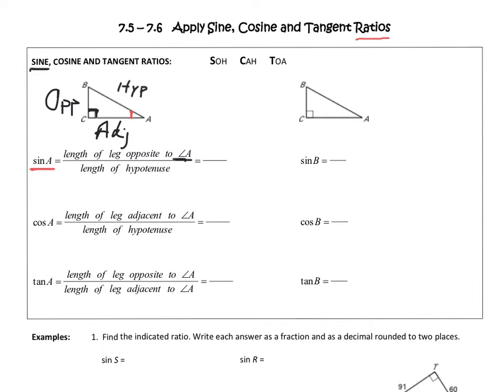So every time we're dealing with a right triangle and I know what angle to focus on, I should start off by labeling my sides: hypotenuse, opposite, and adjacent. Which brings us back to our sine function. That ratio compares the leg opposite angle A — which is side BC — to the hypotenuse in my right triangle, which is side AB.